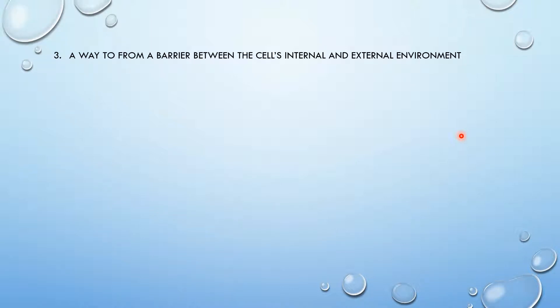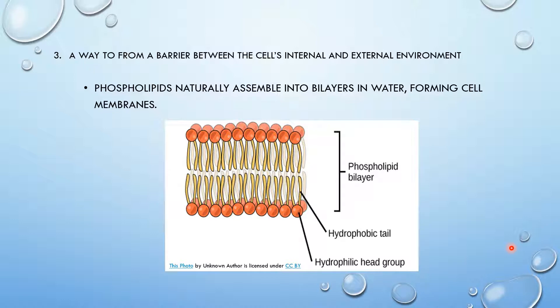Anyways, the third point and last requirement is a way to form a barrier between the cell's internal and external environment, because if they didn't have that barrier, they would have died. And we went over this in unit 1.3, the cell membrane unit, in the cell membrane video. And in that video, we established that phospholipids naturally assemble into bilayers in water, which form cell membranes. And that's how the first cell arose, or those are the requirements for the first cell to arise. And most scientists believe that the first cell was prokaryotic, which makes sense because prokaryotic cells are more simple.